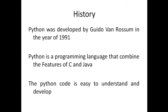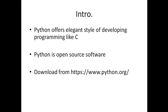Python programming combines features of C and Java — things like object-oriented programming, classes, inheritance, and polymorphism. Your code is very easy to understand, just like reading English. Python offers a very elegant style of developing programs, similar to C.